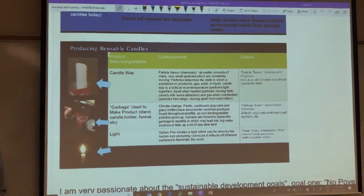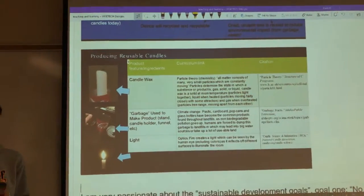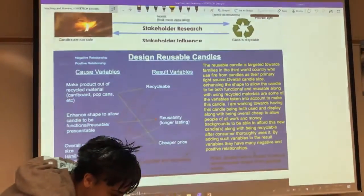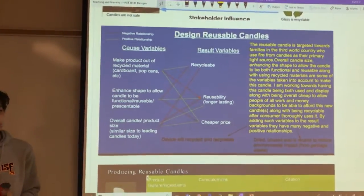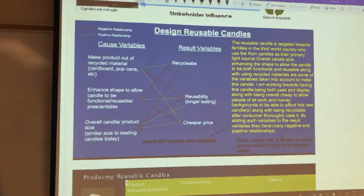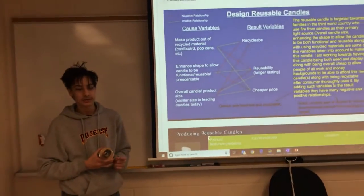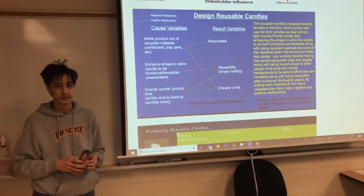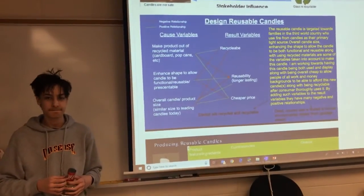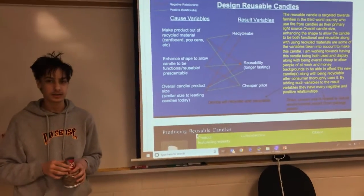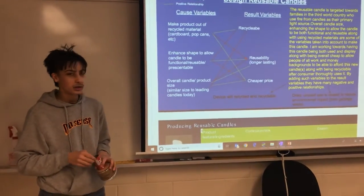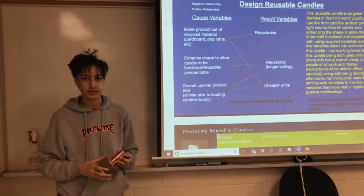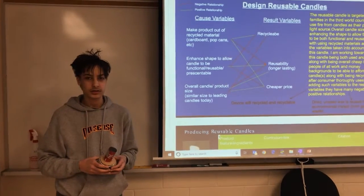A big part of your project had to do with using that design process. A lot of times when students do design projects in school, they use something called design thinking — the idea is that you look at these variables and design something through a process, trying to figure out the best way by changing different factors and variables. We made you have one variable that had to do with STSE — science, technology, engineering, and society.